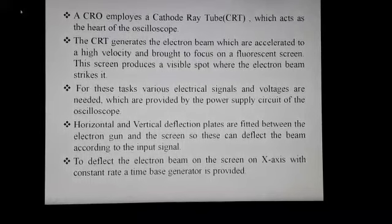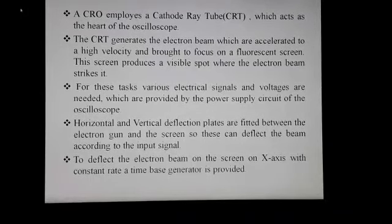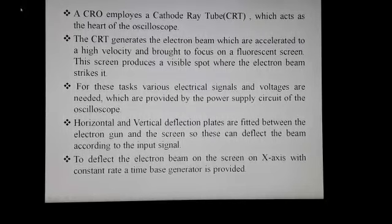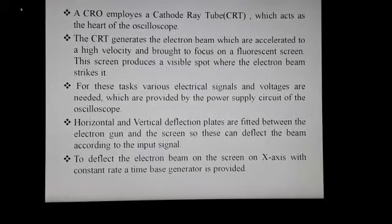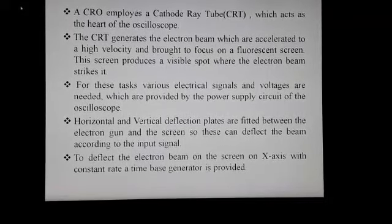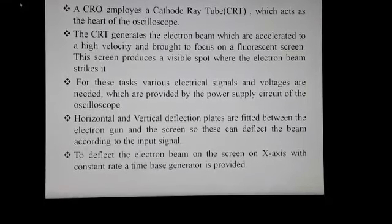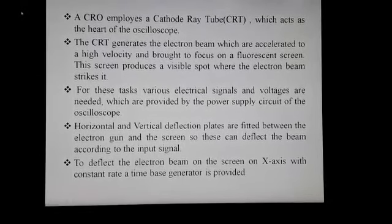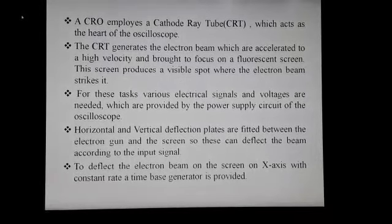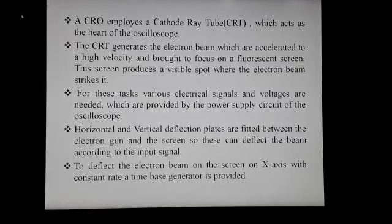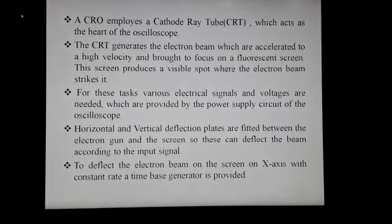The CRT generates an electron beam which is accelerated to a high velocity and brought to focus on a fluorescent screen. This screen produces a visual spot where the electron beam strikes it. Various electrical signals and voltages are needed, which are provided by the power supply circuit of the oscilloscope. The horizontal and vertical deflection plates are fitted between the electron gun and the screen so they can deflect the beam according to the input signal. To deflect the electron beam on the screen on the x-axis at a constant rate, a time-based generator is provided.